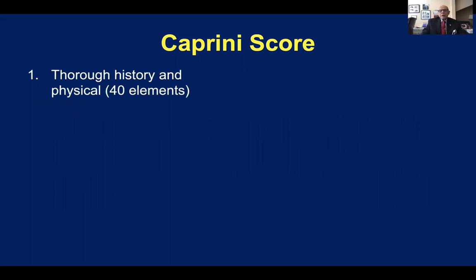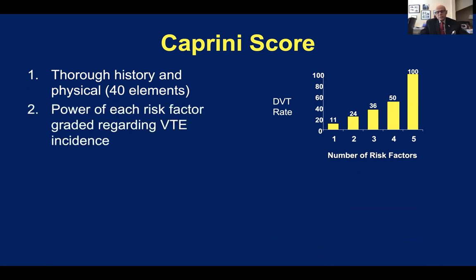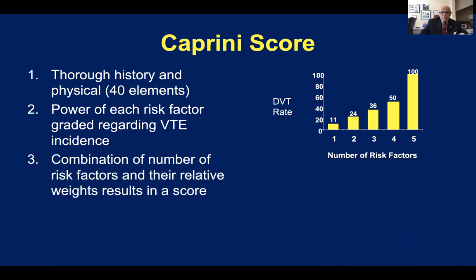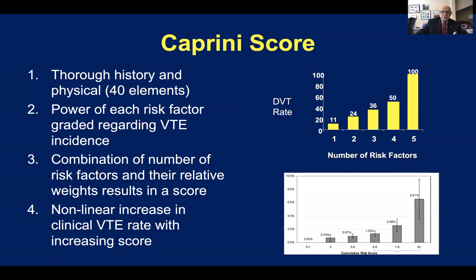There's very little doubt about why I'd like to use the Caprini score, and that's not actually because it was developed by us, but because it's the most comprehensive history and physical available that's been widely tested throughout the world in surgical patients. It consists of 40 elements, and as the number of risk factors goes up, the incidence of DVT increases. We also know that there are different powers for each risk factor — some are very low power such as bed rest, and others such as pancreatic or esophageal cancer are very high risk. Taking the number of risk factors and their weights together, we arrive at a simple score that correlates with the incidence of clinical VTE events. As the score rises, so does the incidence of venous thromboembolic disease.